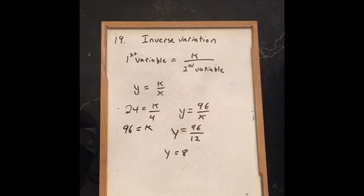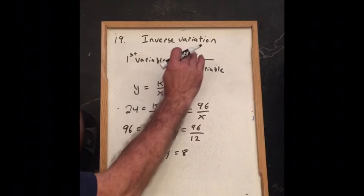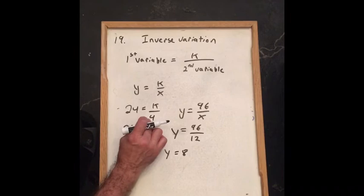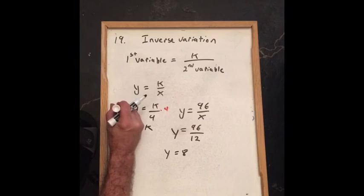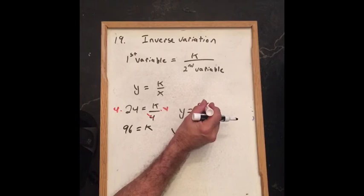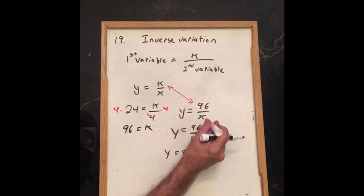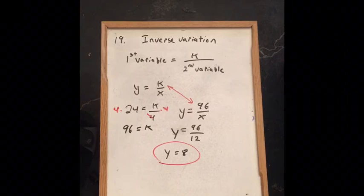For problem 19, we use inverse variation: y equals k divided by x. We know y equals 24 when x equals 4, so multiplying both sides by 4 gives k equals 96. Therefore y equals 96 over x. When x equals 12: y equals 96 divided by 12, which is 8.